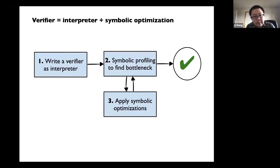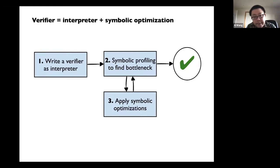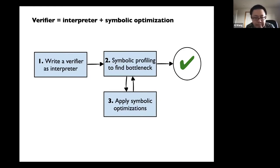To make this work, you need to write a verifier as an interpreter for your RISC-V instructions. Then if there's any issue, you can run the symbolic profiler to see if there's any bottleneck. If nothing is wrong, just run the entire thing — you're done once you write the spec. If the verifier just dies — very slow, takes hours or days, or just runs away — then you need to find out where things went wrong and apply symbolic optimizations.